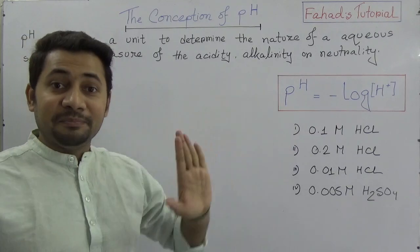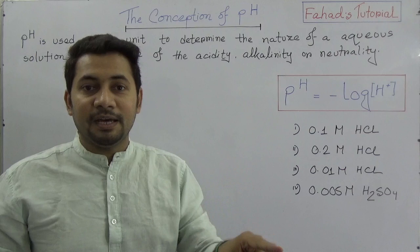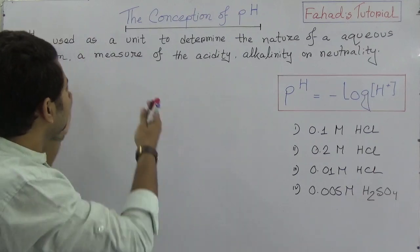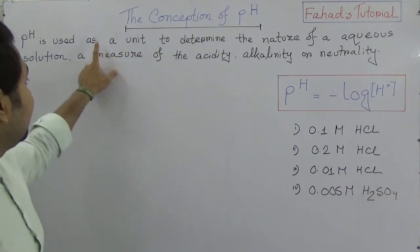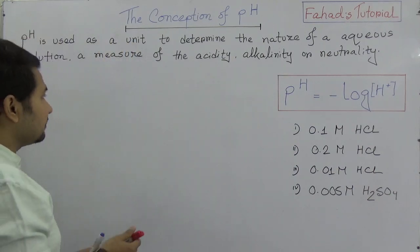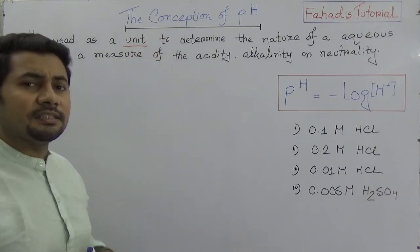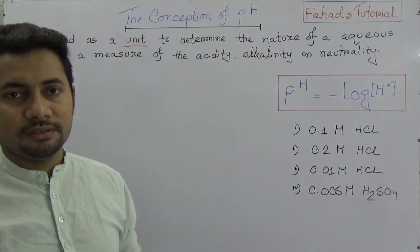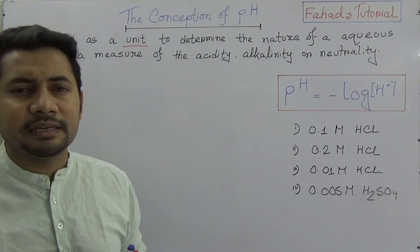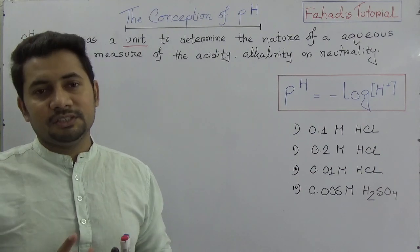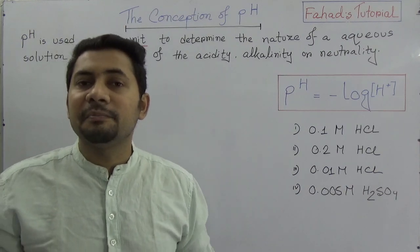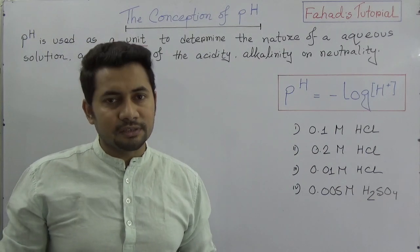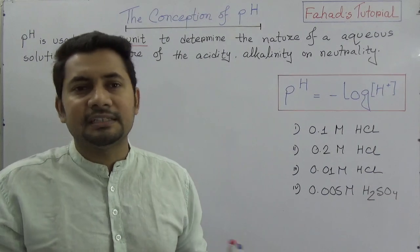You know that pH is the negative logarithm of H+ ion in a solution. So primarily, what is the definition of pH? We can say that pH is used as a unit to determine the nature of an aqueous solution — whether it is alkaline, neutral, or acidic. Simply put, pH determines the acidity, neutrality, and alkalinity of a solution.